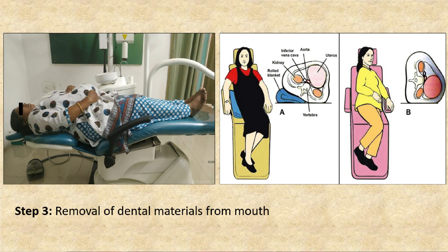For pregnant patients, the right hip is slightly elevated by 10 to 12 centimeters by placing a pillow or blanket on the right side, and the patient is tilted 5 to 15 degrees to the left so that pressure on the vena cava is reduced, as seen in the diagram. If the patient is still not relieved, they should be placed in a completely left lateral position.